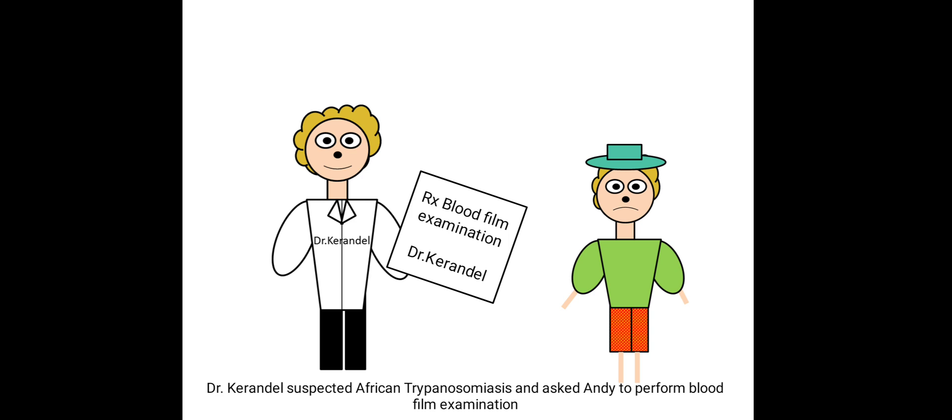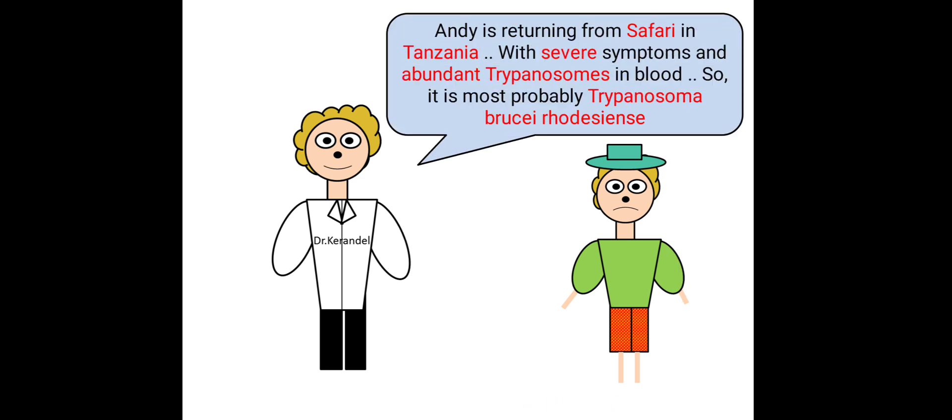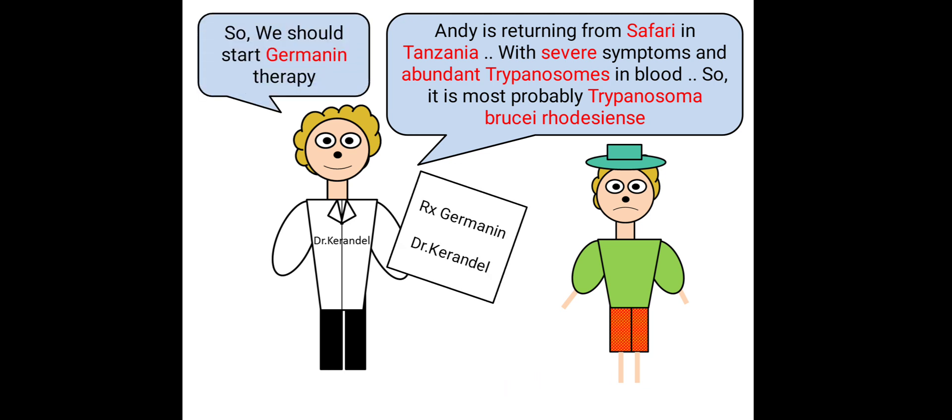And asked Andy to perform a blood film examination. Trypanosomes were found in abundance in Andy's blood. 'Oh, Andy is returning from safari in Tanzania where wild game animals are present there with severe symptoms and abundant trypanosomes in blood. So it is most probably Trypanosoma brucei rhodesiense, so we should start suramin therapy.'